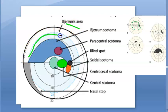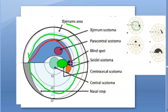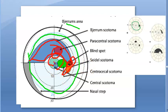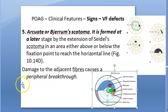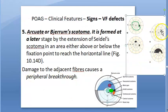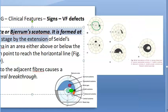Let's recap the sequence so far: (1) isopter contraction, (2) baring of blind spot, (3) paracentral scotoma, (4) Seidel scotoma, (5) arcuate or Bjerrum's scotoma. These are the first five types of visual field effects in primary open-angle glaucoma, all occurring in the central field.